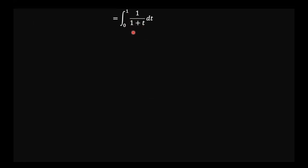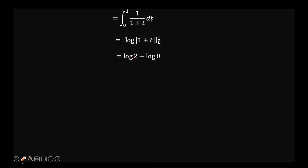This integral is a simple one. We integrate to get the natural logarithm of (1 plus t), evaluated from 0 to 1. That gives ln(1 plus 1) minus ln(1 plus 0), which is ln(2) minus ln(1). Since ln(1) equals 0, our final answer is ln(2).